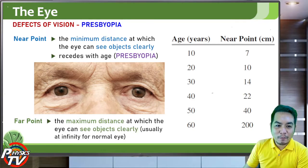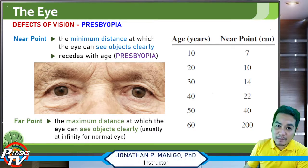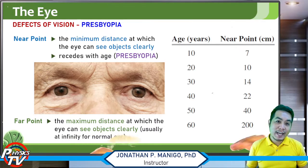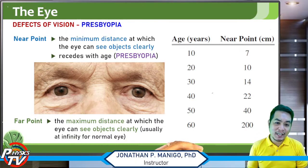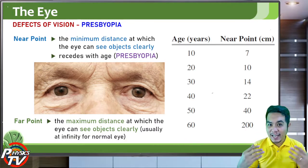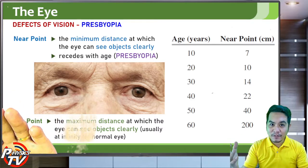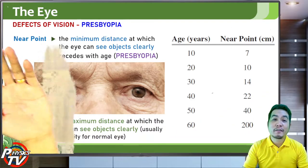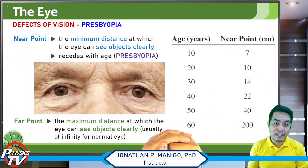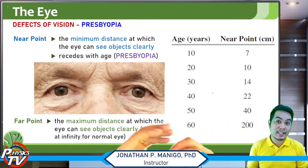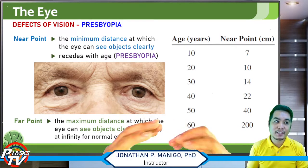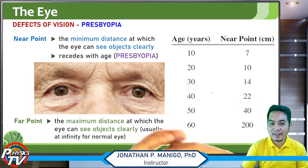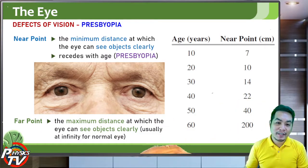The far point is the maximum distance that our eyes can see clearly. For a normal eye, it is at infinity — a very, very far distance. For example, we can still see stars and the moon, which are basically at a very far distance.